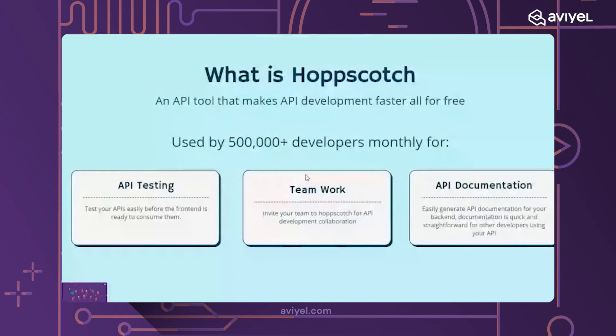Because the front end is not always available, you don't have any means of testing your API — so with Hoppscotch you can test your API even without the front end or any UI. On Hoppscotch you can also do teamwork: you can invite your team to collaborate on the same API and do great things together.